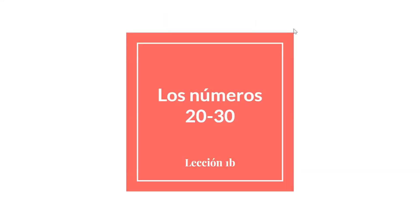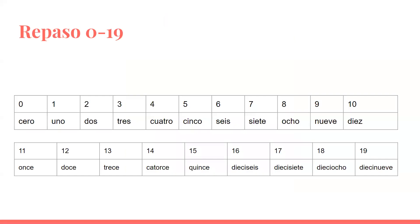Module 4, Lección 1b, los números 20 a 30. All right, so we've learned all of the numbers up to 100, except for the numbers in between 20 and 30, which I know is kind of weird, but it's because they look a little bit different and I didn't want to overwhelm you.